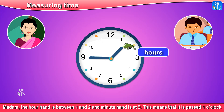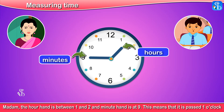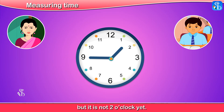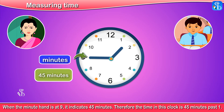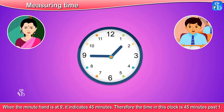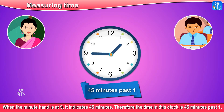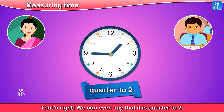Madam, the hour hand is between 1 and 2 and the minute hand is at 9. This means that it is past 1 o'clock but it is not 2 o'clock yet. When the minute hand is at 9, it indicates 45 minutes. Therefore, the time in this clock is 45 minutes past 1. That's right. We can even say that it is quarter to 2.